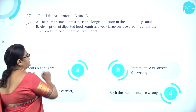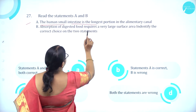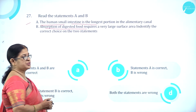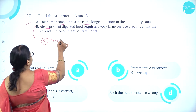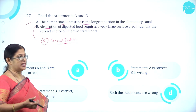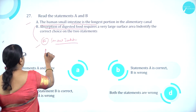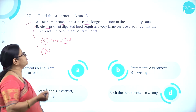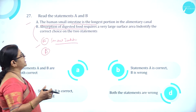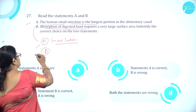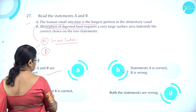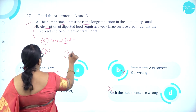Moving on to question number 27. Read statements A and B. Statement A: the human small intestine is the longest portion in the alimentary canal. Statement B: absorption of digested food requires a very large surface area. The small intestine is a very long, highly coiled structure of the alimentary canal — statement A is correct. Major absorption takes place in the small intestine via finger-like projections called villi, requiring a very large surface area — statement B is also correct. So option A, both statements are correct.